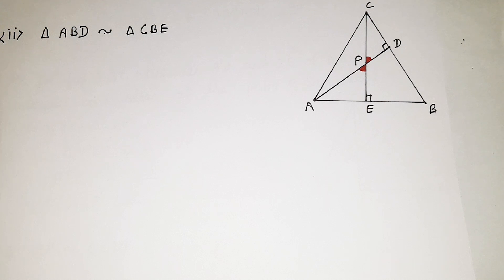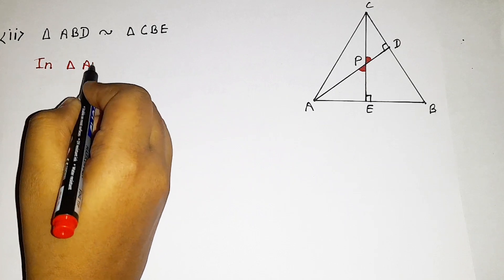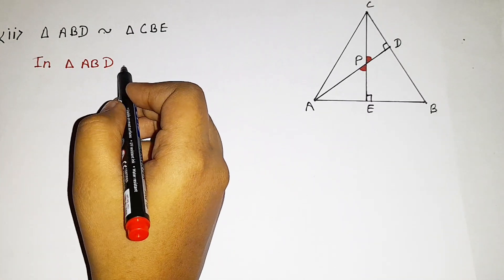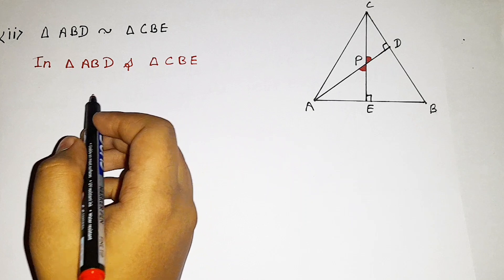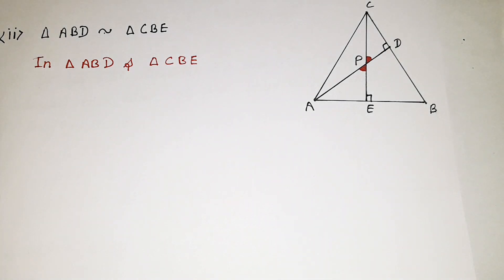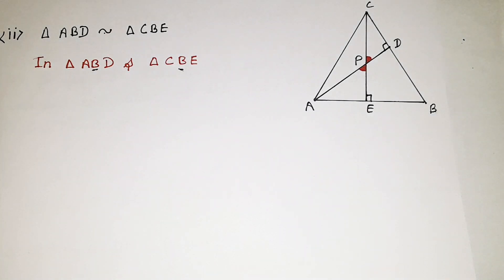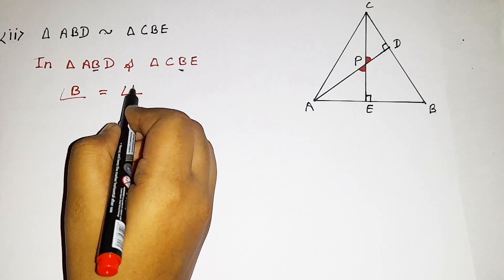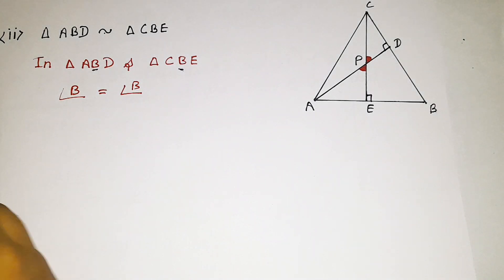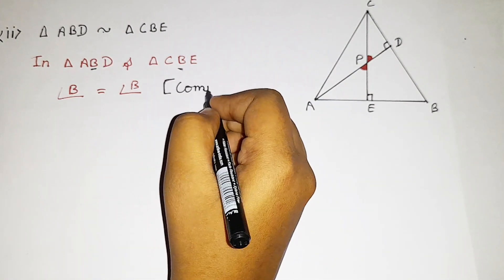In triangle ABD and triangle CBE, do you think we get angle B in both the triangles? Of course we do. So I can write angle B is equal to angle B. Why? Because angle B is common in both the triangles. If a value appears in both triangles, we can take it as common.